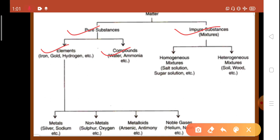Elements, for example, iron, gold, hydrogen, etc. An example of compounds are water, ammonia, etc.